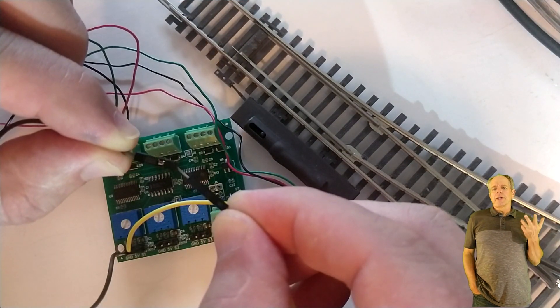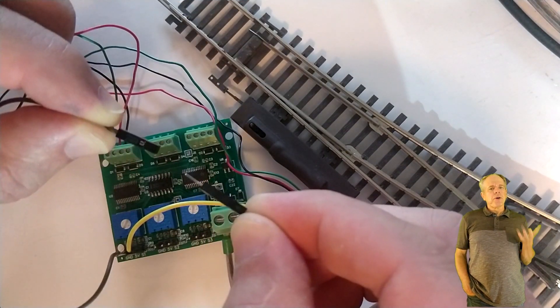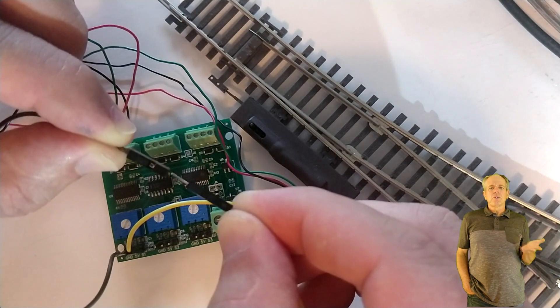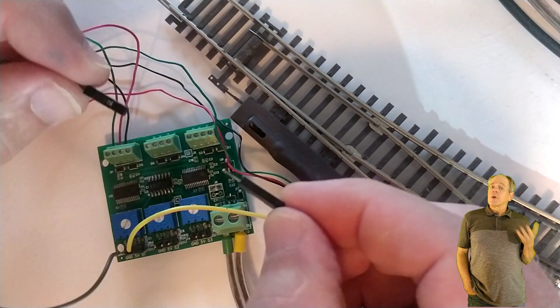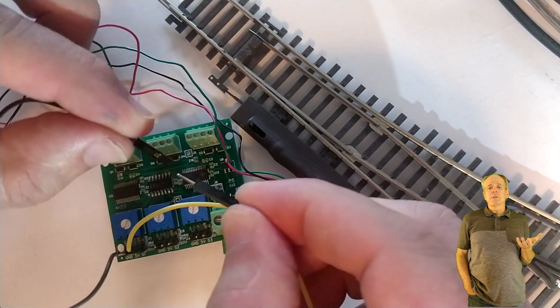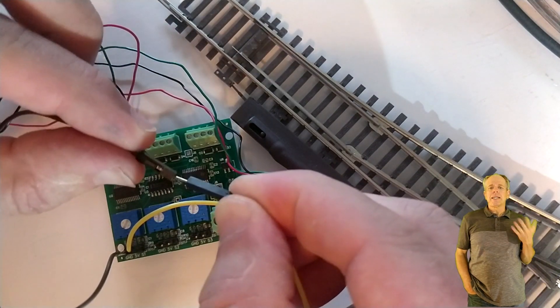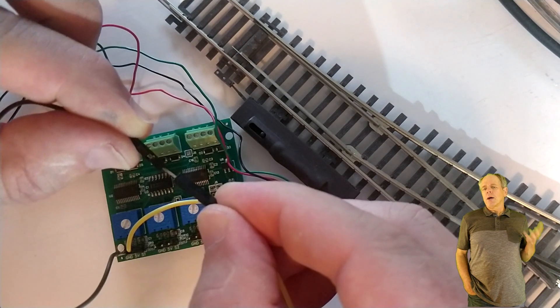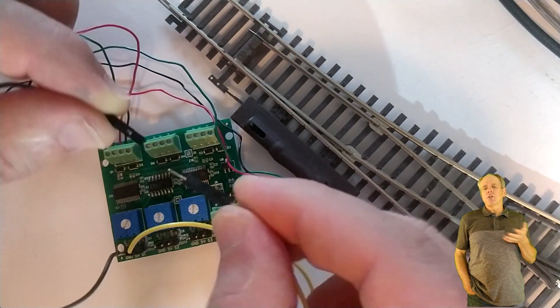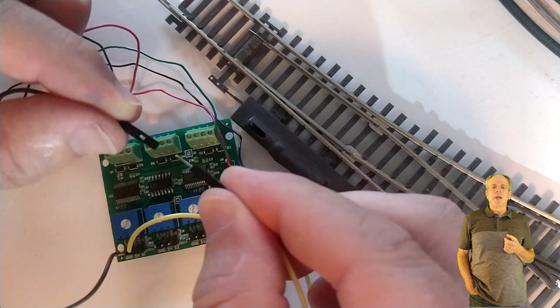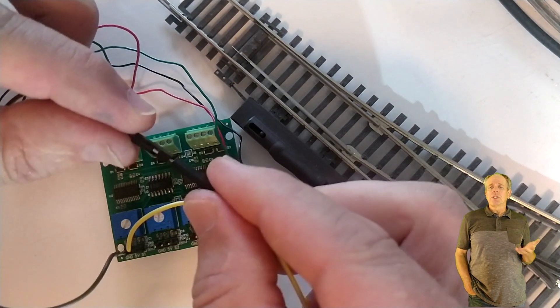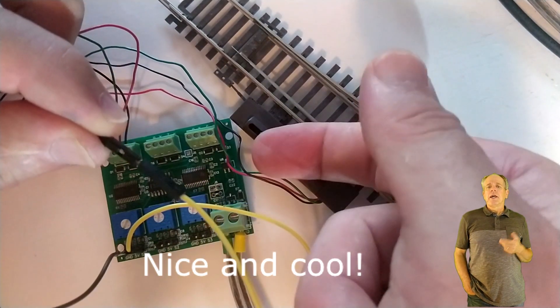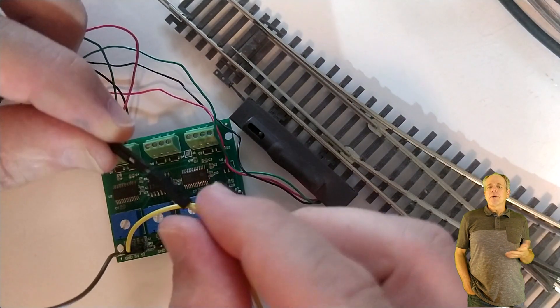Now you can connect a snap switch. Turn the potentiometer all the way to the left so the pulse is as short as possible. From what I have seen, the shortest pulse works with most of the snap switch turnouts, so you probably want to use this setting to avoid overheating of the coil. These switches are typically designed for an AC voltage of 50 or 60 Hz. So, the current is limited by the impedance.